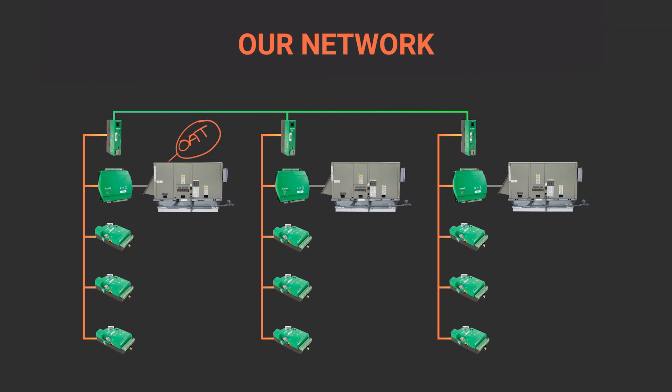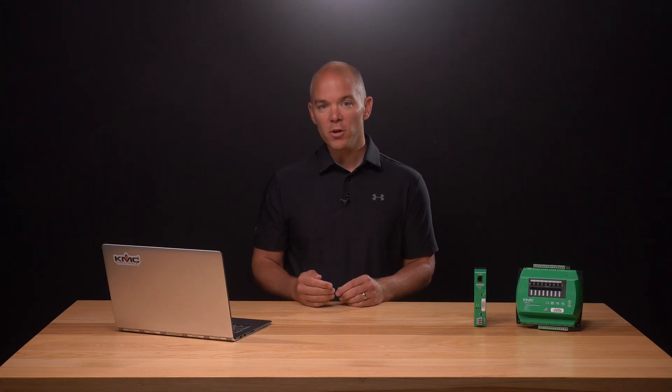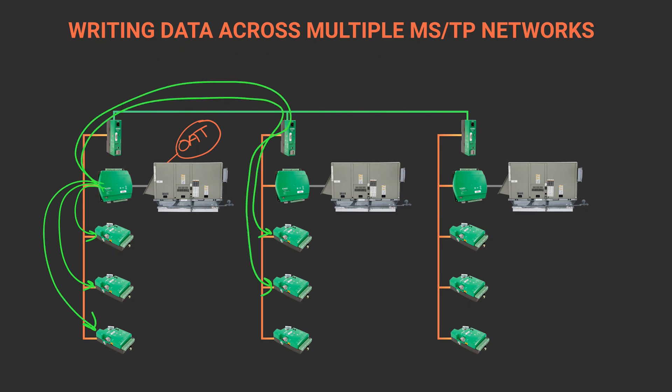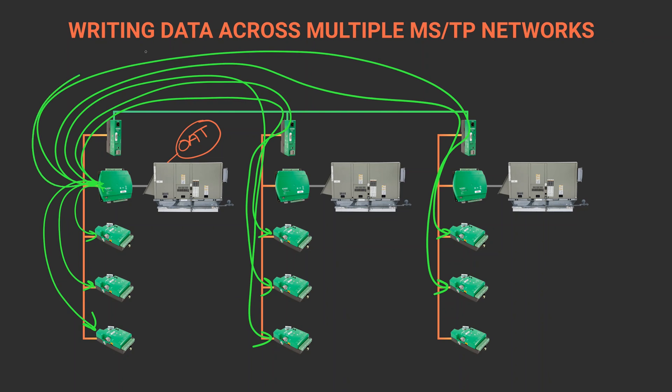Here, we have multiple air handlers and VAVs on multiple MSTP networks, all connected with routers. We could push the outside air value with writes from the controller with the outside air temperature sensor to all the controllers in the system. Given the number of VAVs in the system, this would be a large program and create a single point of failure for point passing.